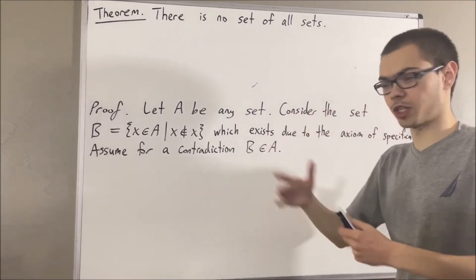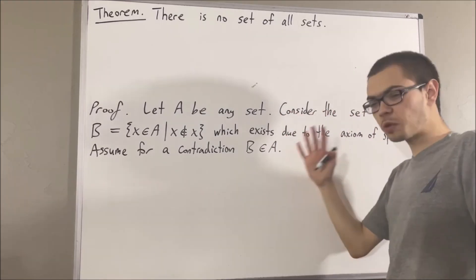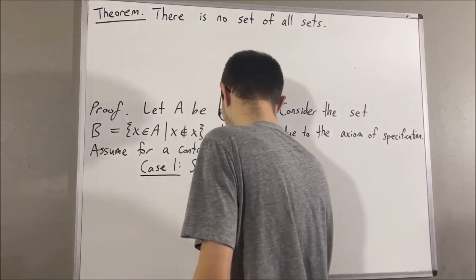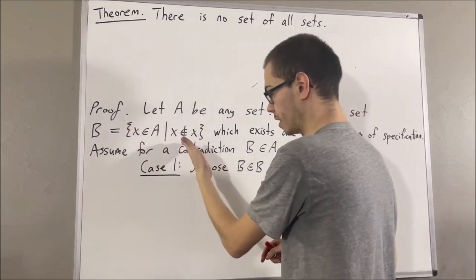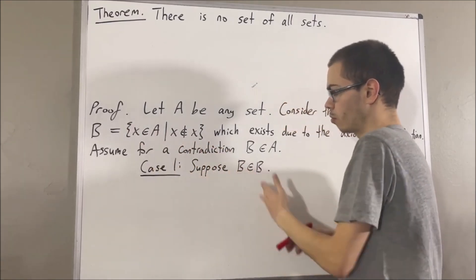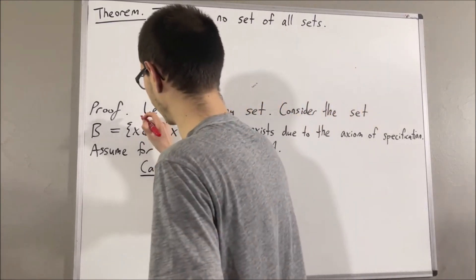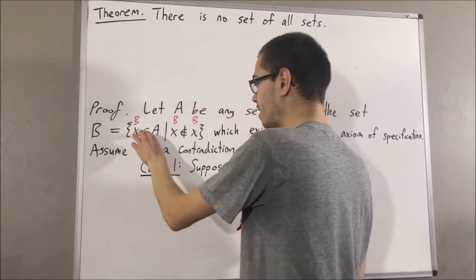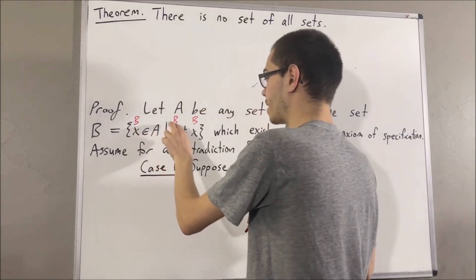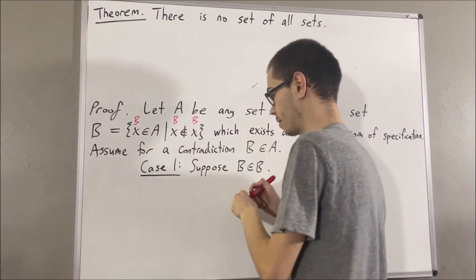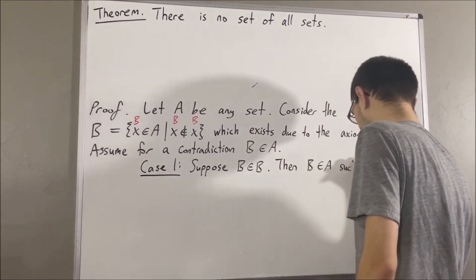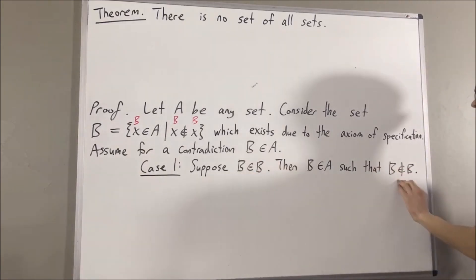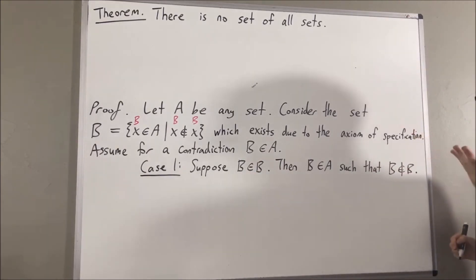In either case, we are going to reach a contradiction. Let's first consider the case B is an element of B. Well then, by definition of B, since B is an element of B, if we take x to be B, then we have B as an element of A with the property that B is not an element of B. And so we have B is an element of B and B is not an element of B — but that's a contradiction.